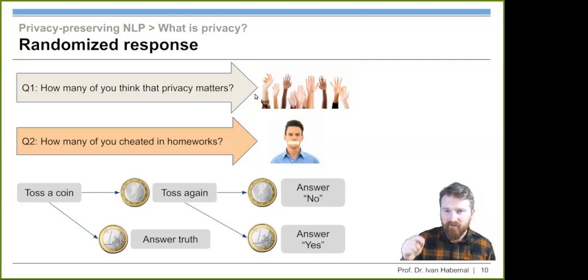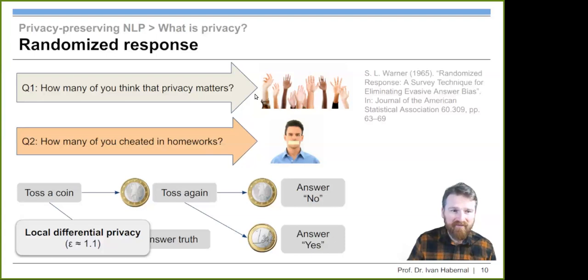The point is, your privacy is preserved or prevented. I don't see the truth value. But if I do this, if I ask this question with this process over the whole classroom, like a hundred people, I can actually get a pretty good estimate how many people on average may have cheated or not. So I'm getting my answer which I really asked while still preserving everybody's privacy.